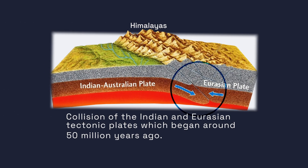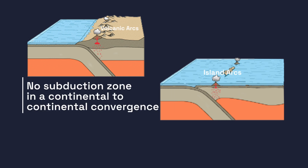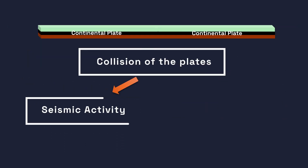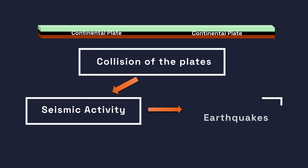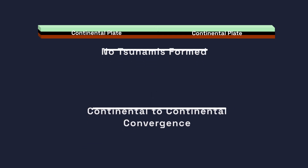This results in the formation of large mountain ranges through tectonic compression. The Himalayas were formed due to the collision of the Indian and Eurasian tectonic plates, which began around 50 million years ago and continues today, causing the earth's crust to uplift and fold. Volcanic arcs and island arcs are not formed in this type of convergence because there is no subduction zone. The collision of the plates generates significant seismic activity resulting in earthquakes, but tsunamis cannot be generated at this type of convergent boundary.